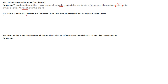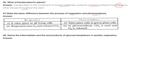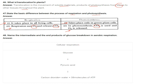State the basic difference between respiration and photosynthesis. Respiration takes place in all living cells, uses oxygen, and releases carbon dioxide. Photosynthesis takes place only in green plant cells, utilizes CO2, and releases oxygen. Name the intermediate and end products of glucose breakdown in aerobic respiration: glucose is converted to pyruvic acid, then to carbon dioxide, water, and 38 molecules of ATP (adenosine triphosphate).